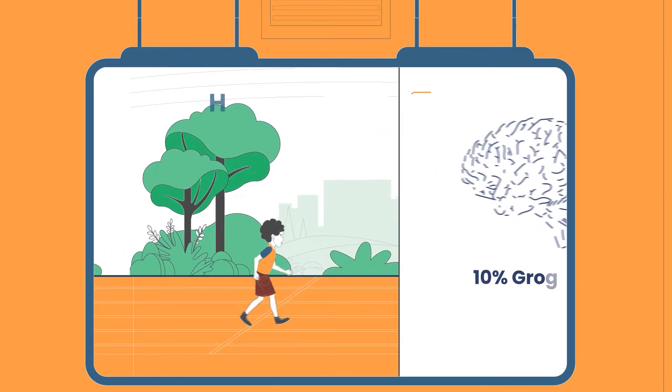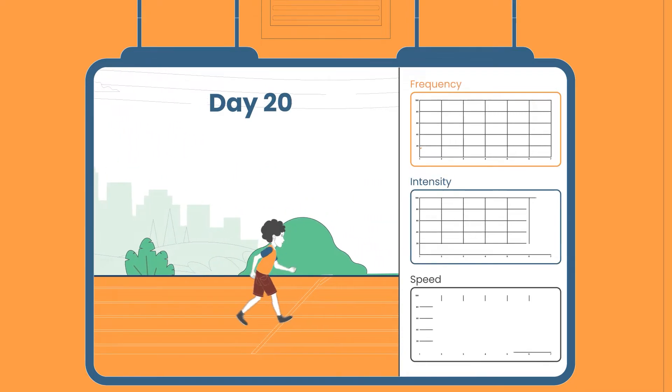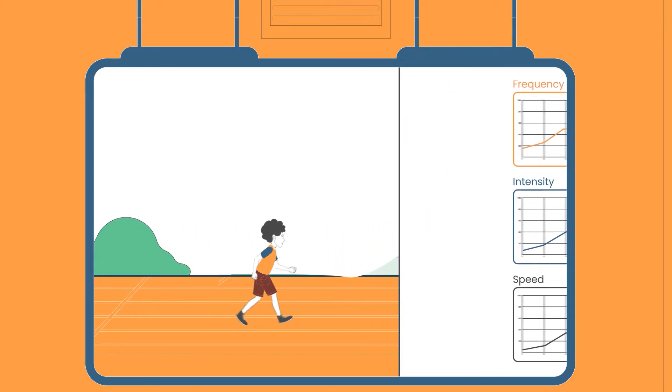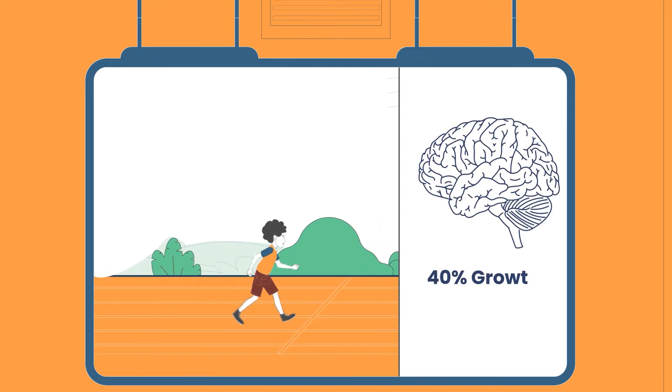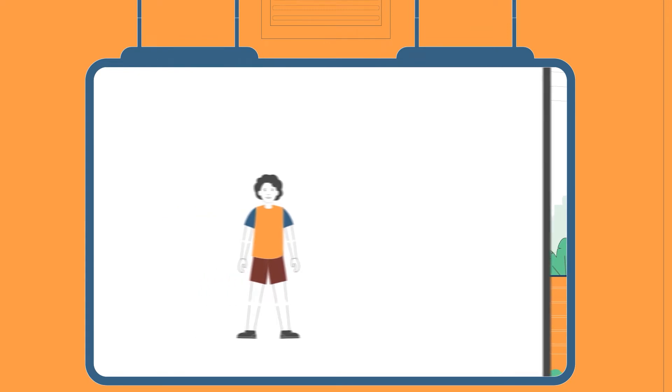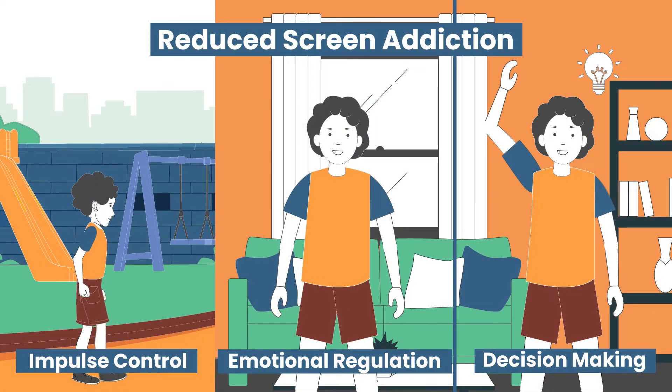Our interventions have consistently shown over 40% growth in development of super abilities in children in less than 45 days, which has resulted in them performing exceptionally well across varied areas, such as improved scores in maths to reduced screen time.